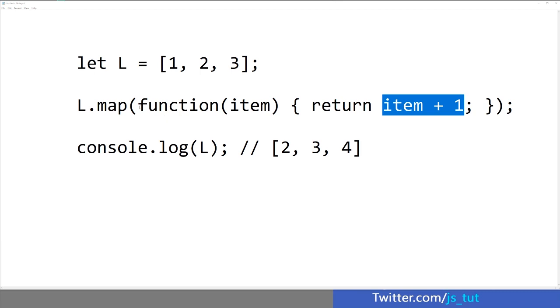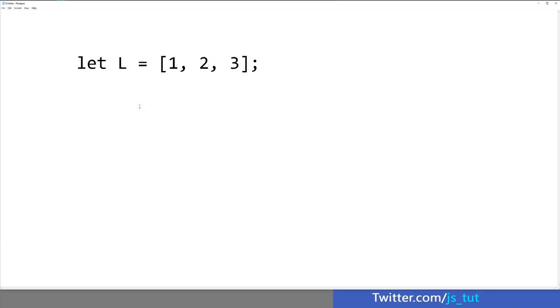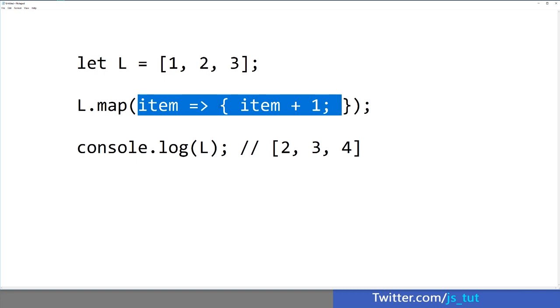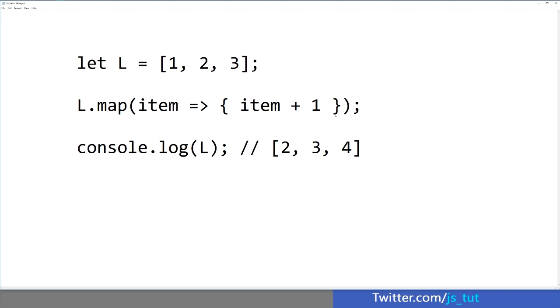In ECMAScript 6, we can actually use arrow functions and arrow functions do not require the function keyword. So what you do is basically delete this and use the arrow syntax. And it's actually exactly the same thing. It just looks cleaner and that's what an arrow function is. But arrow functions can take it one step further. And if you actually only have one statement in here, you are allowed to remove these parentheses here and remove the return keyword as well. So this syntax is exactly the same thing as the previous examples.